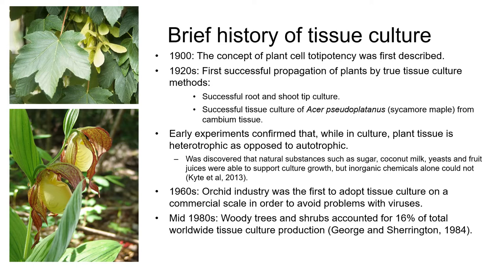Now let's look at a very brief history of tissue culture. As with many vegetative techniques of macro propagation, the success of tissue culture techniques is based on the concept of totipotency in plant cells, which we discussed in an earlier module. Totipotency was first described in the late 1800s, and the first successful propagation of plants using true tissue culture methods was carried out in the 1920s using root and shoot tip culture and cambium tissue from the sycamore maple, Acer pseudoplatanus.